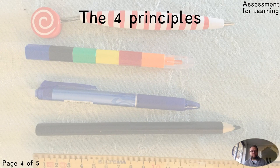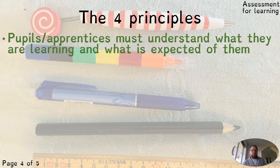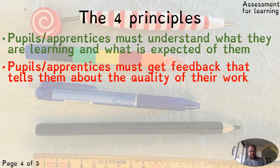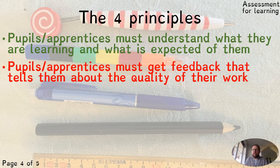This generates four principles that have stood at the heart of Norway's assessment revolution. First, pupils and apprentices must understand what they are learning and what is expected of them — that addresses the gotcha effect, so they're not writing something without knowing what's expected. Second, they must get feedback that tells them about the quality of their work. These conversations about quality are really important — no niceness, no 'you are really clever.' Work-related feedback only.